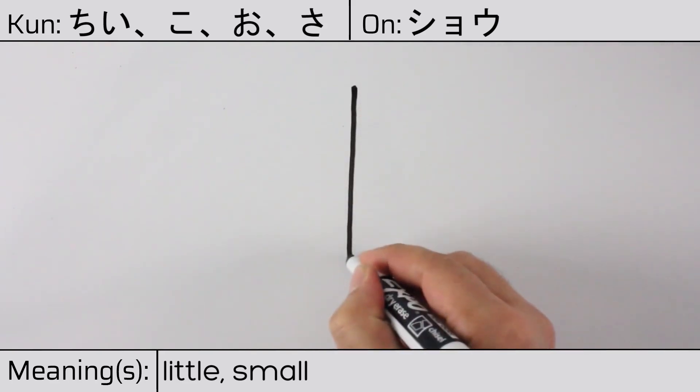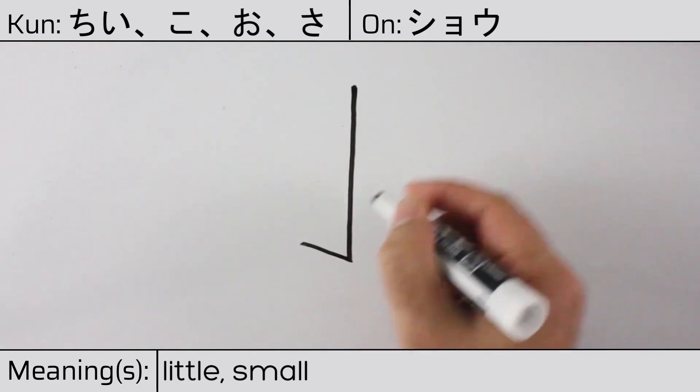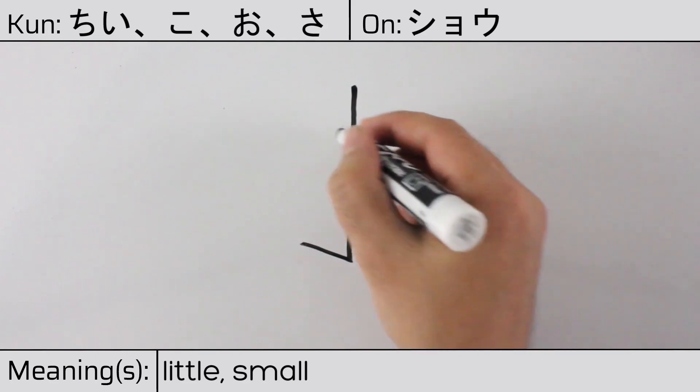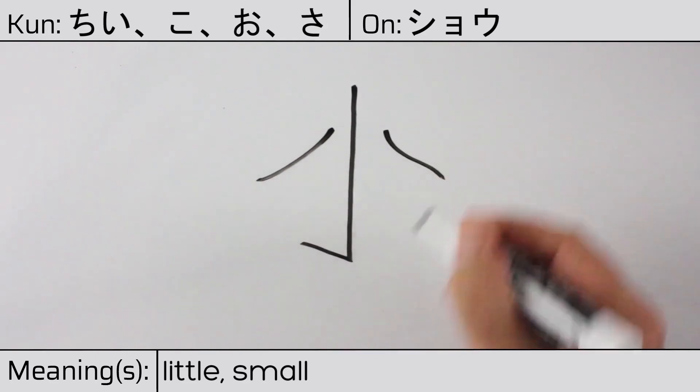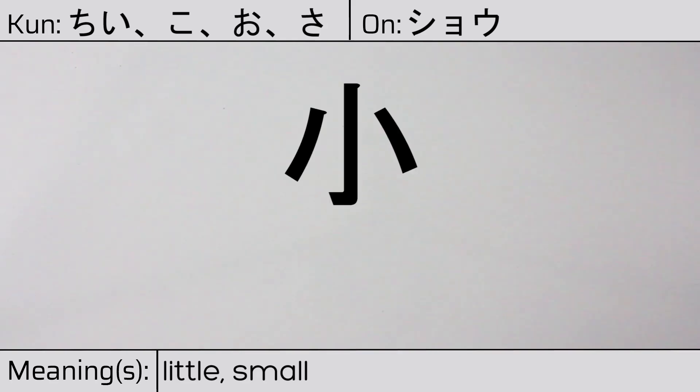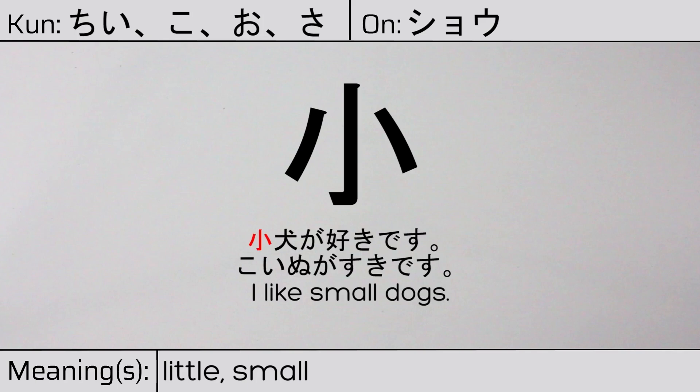This character began as three small dots, and over time evolved into the character we see now. Our example sentence is: koinu ga suki desu — I like small dogs.